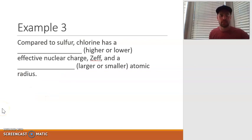And then example three. Compared to sulfur, chlorine has a blank effective nuclear charge and a blank atomic radius. So let's first find sulfur and chlorine on our periodic tables. They're right next to each other. Based on that, chlorine has a higher effective nuclear charge, because it's further to the right. And based on that, it would end up having a smaller radius, because that higher effective nuclear charge would pull the electrons in tighter.